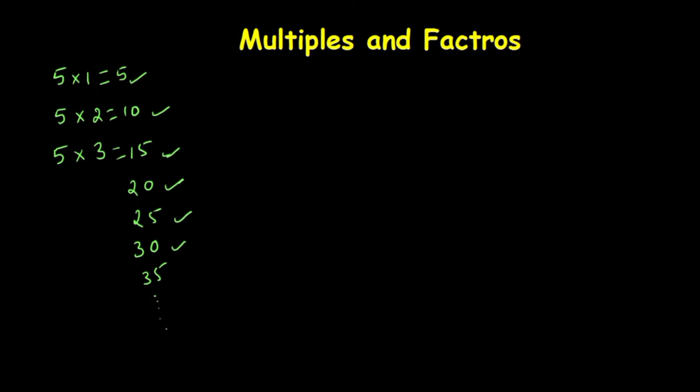These all are called multiples of 5. So 5, 10, 15, 20, 25, 30, 35 - these all are called multiples of 5. Now I am going to take one more example, that is 2.